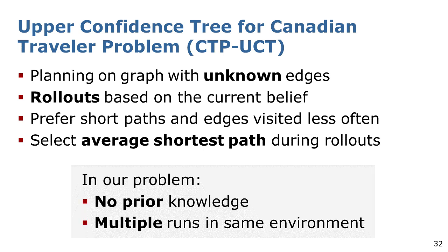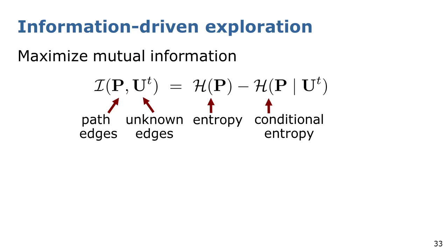Our problem presents two main differences to this setting. We have no initial knowledge about the environment, and thus no prior probabilities. And also, the robot is required to perform multiple tasks on the same environment. Therefore, we aim at leading the robot to navigate along short paths, but at the same time, to collect information about the environment. To this end, we incorporate an exploration behavior into our system.